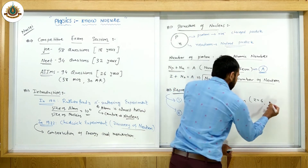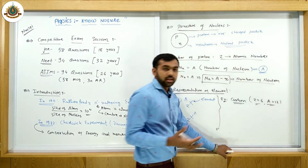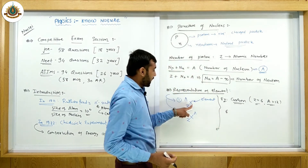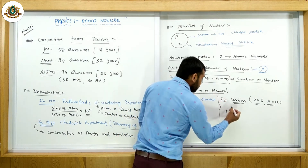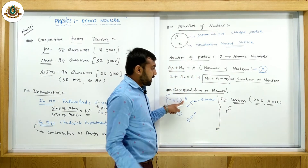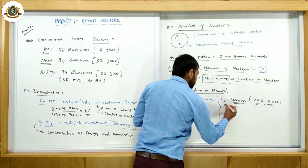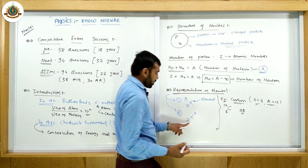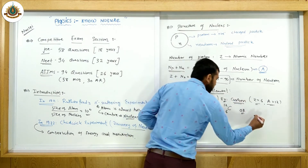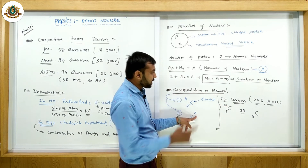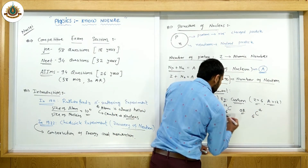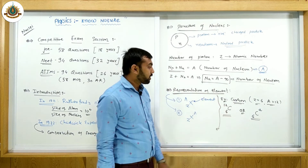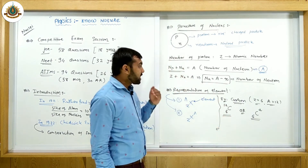For example, consider carbon where Z = 6 and A = 12. In the first method, you write it as 6C12. In the second method, it is also written as 6C12 — both representations are correct and both are commonly used. So carbon can be represented either way. This is the standard representation of any nucleus.